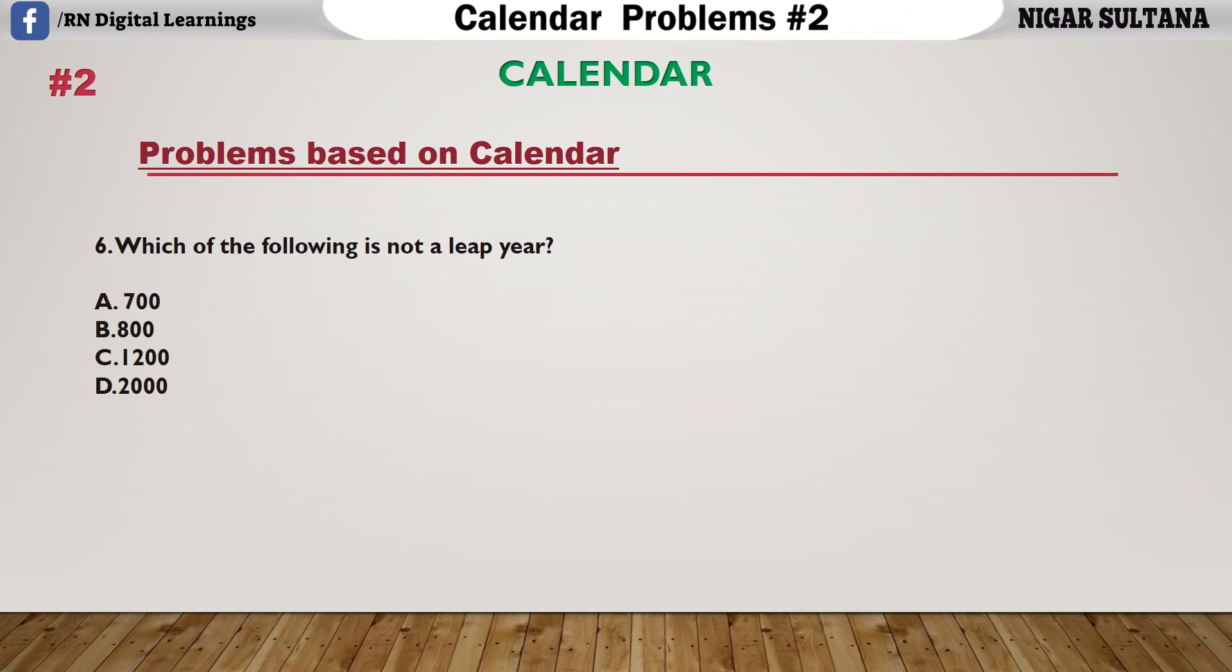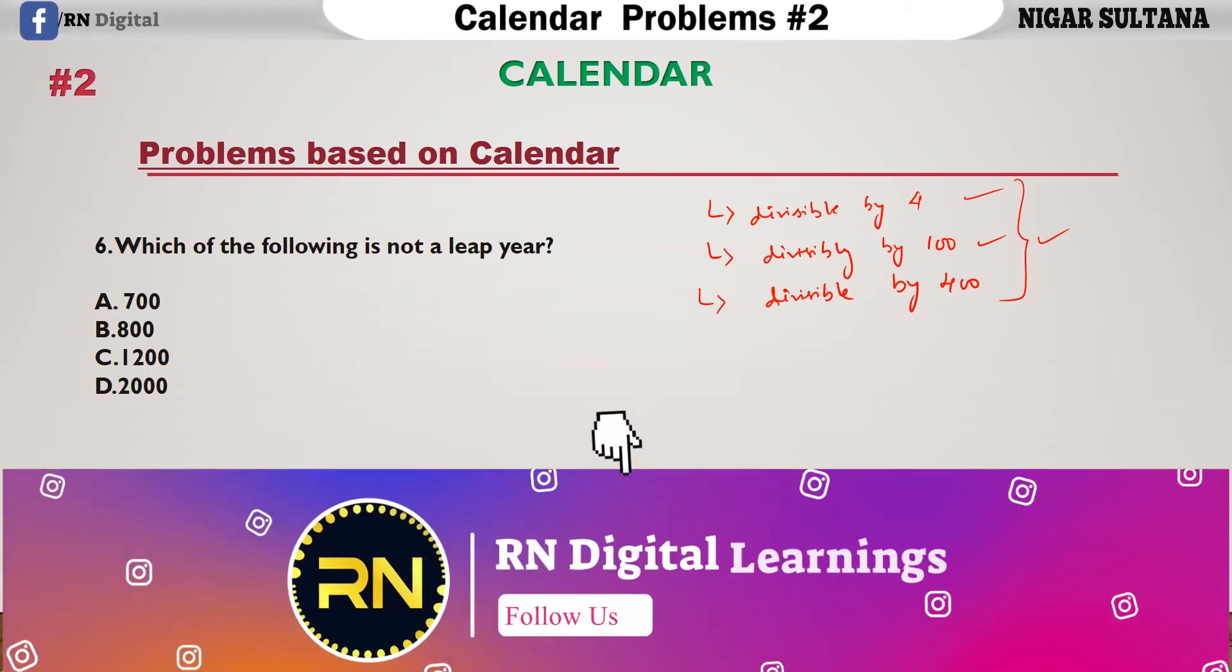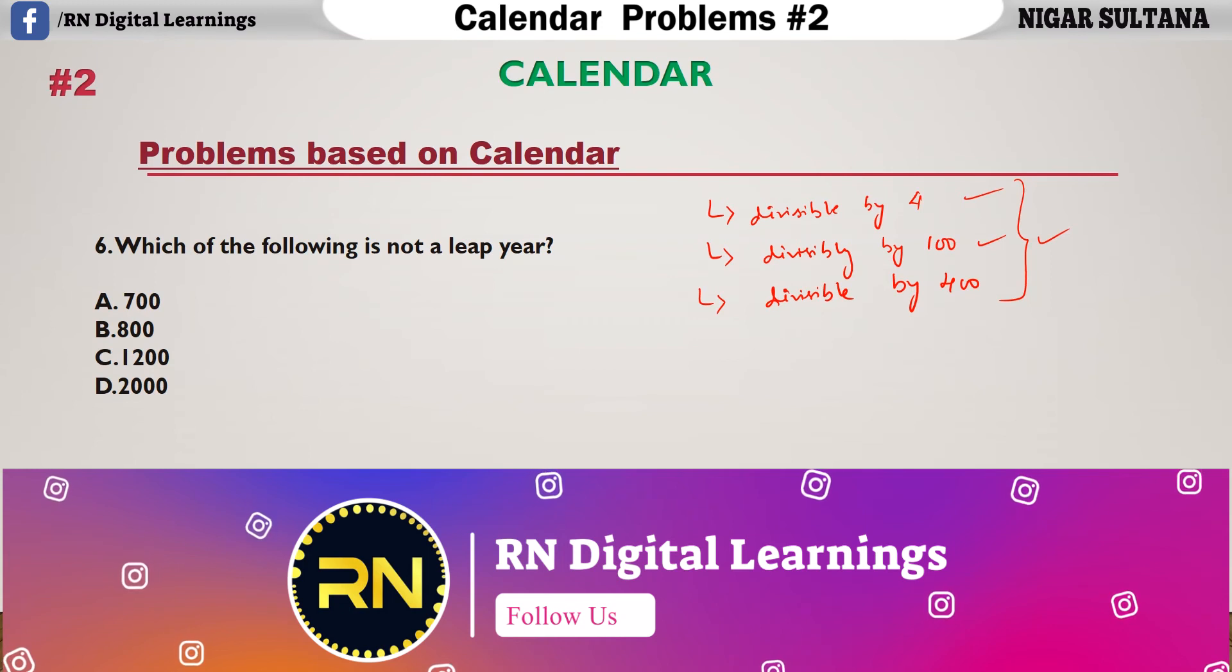Now, let us move on to the next problem. Which of the following is not a leap year? There are certain steps to find whether the year is a leap year or not. First step is, we must check whether it is divisible by 4 or not. Then go on to the next step, whether it is divisible by 100, then whether it is divisible by 400 or not. If all these 3 cases provide us the value which is true, then it is a leap year. If it does not satisfy any of this step, then it is not a leap year.